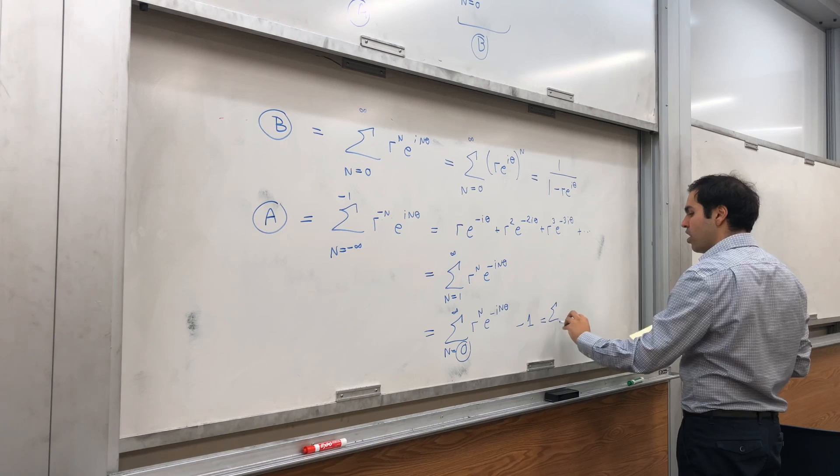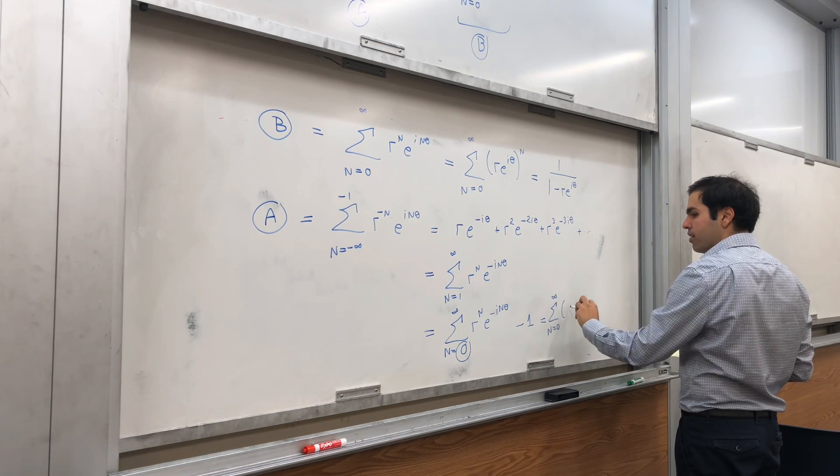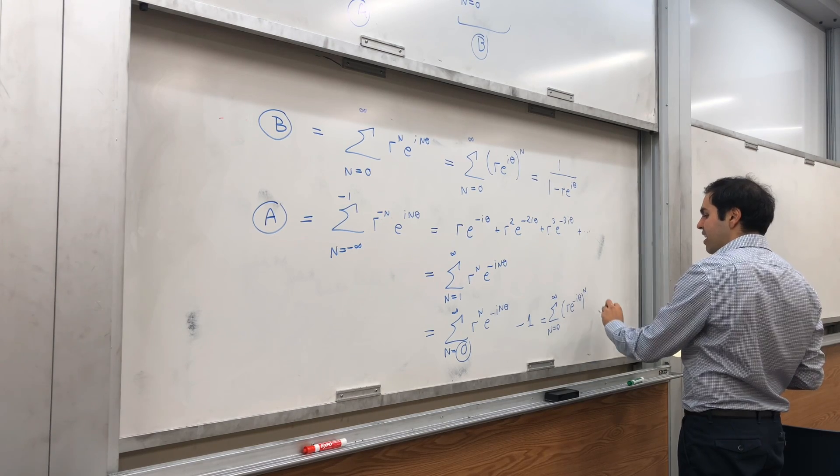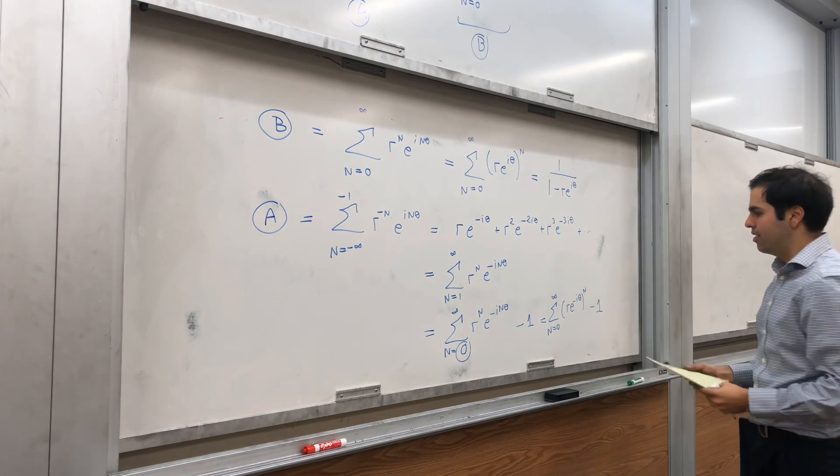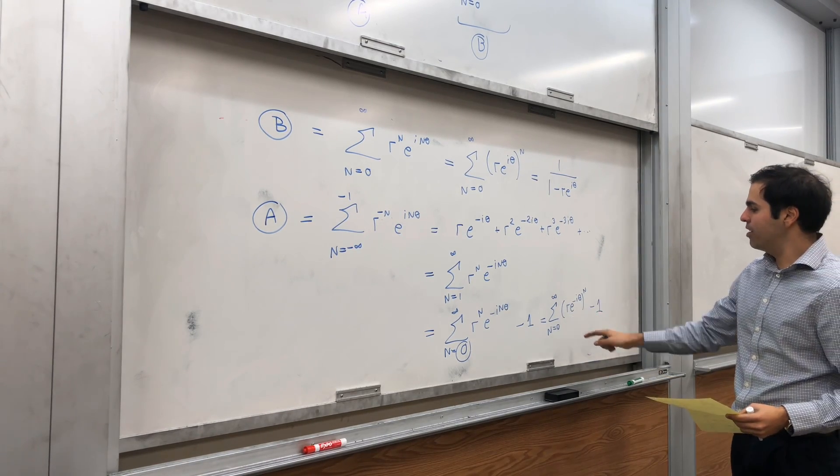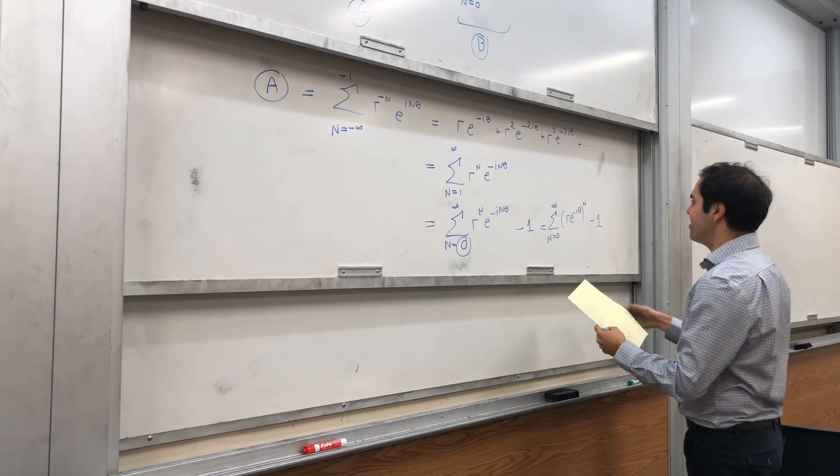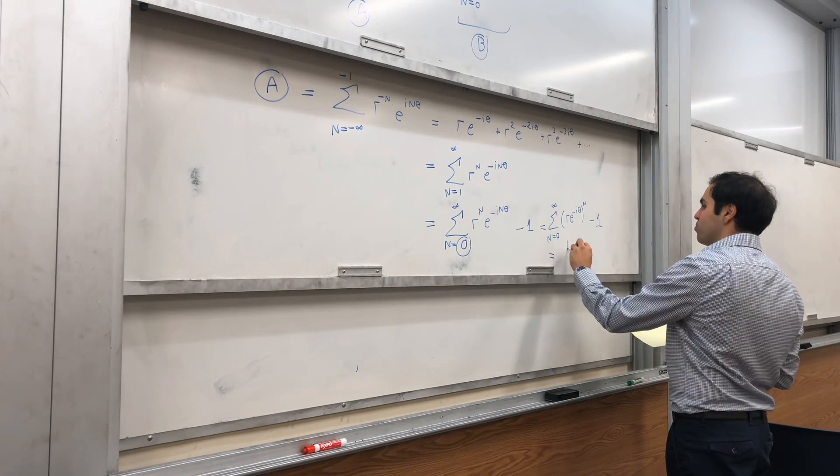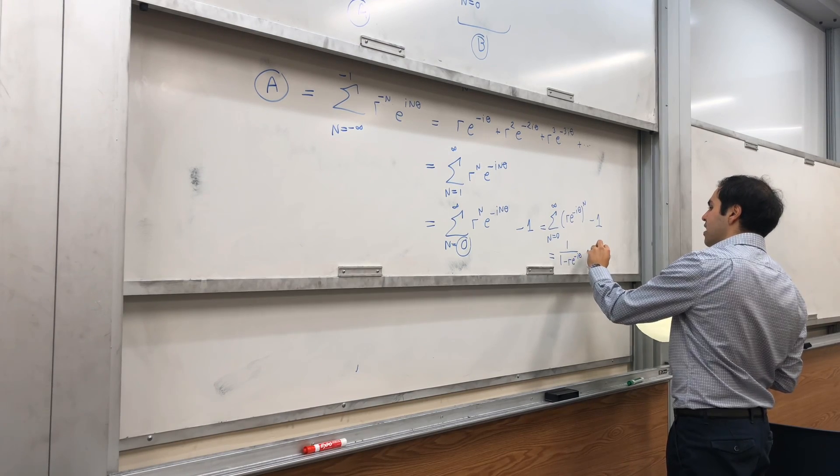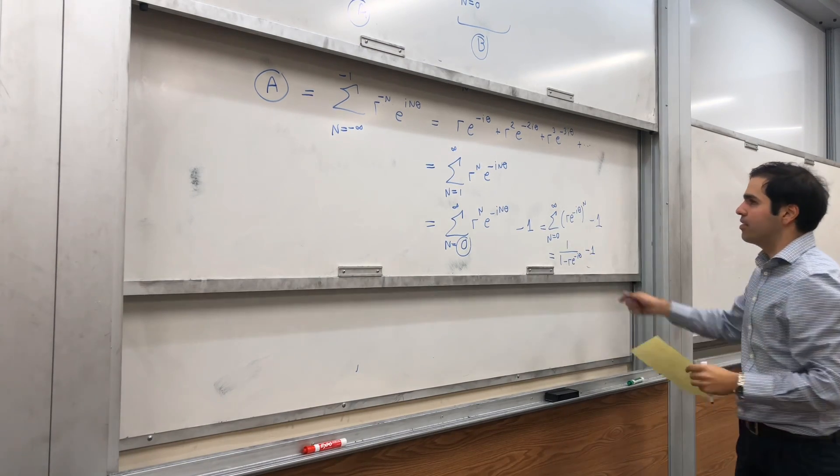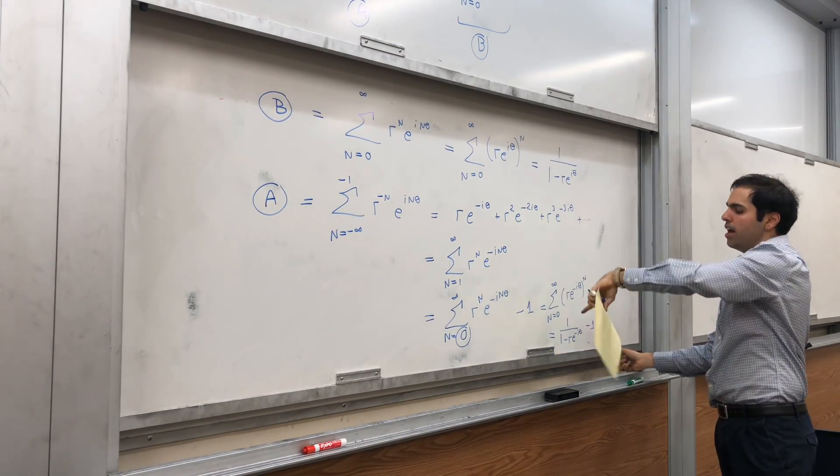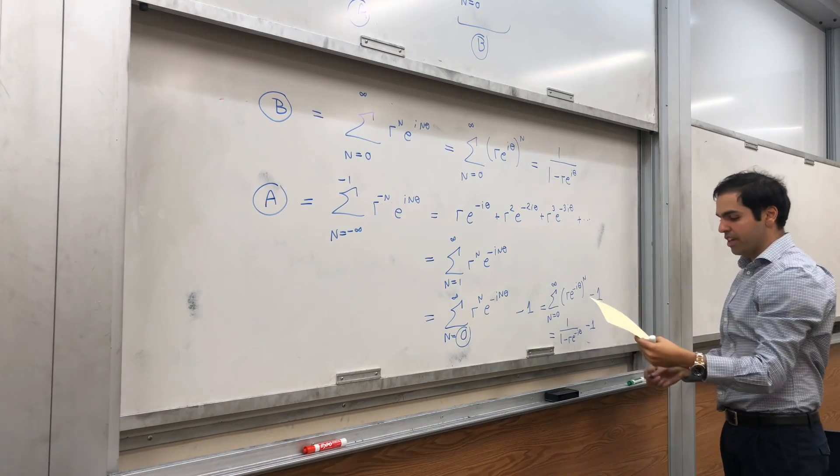And you get the sum from 0 to infinity of (re^(-iθ))^n minus 1. And then, now we can use your best friend, but with re^(-iθ), and it becomes 1/(1 - re^(-iθ)) - 1. So that is the result of A, and then all we have to do is just add A and B together.